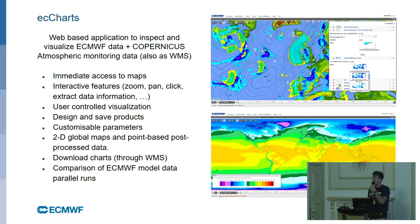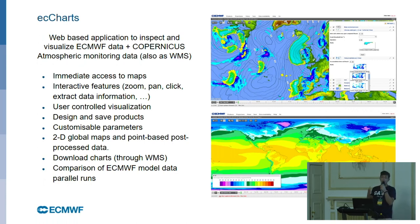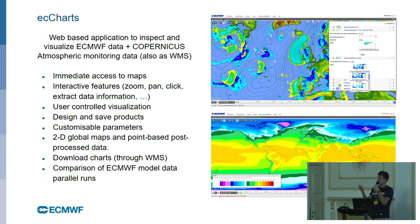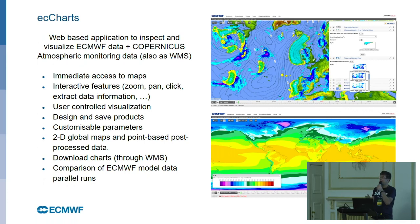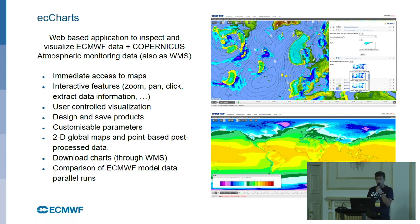We have customizable parameters as well. ECMWF runs an operational model called the high resolution model, but we also generate probabilistic forecasts. We run the same model 50 times every day, twice a day, and out of those 50 forecasts, which are at slightly lower resolution, users can generate probabilistic forecasts. So they can generate, for example, the 2 meter temperature probability — 2 meter temperature being more than 10 degrees or less than 0 degrees — all those custom generated products.